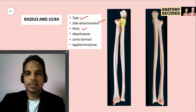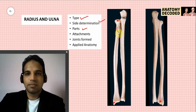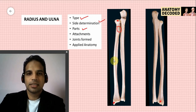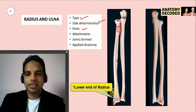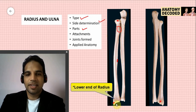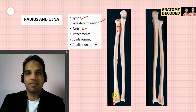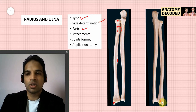Parts of the radius: upper end, shaft, and lower end. In the upper end: the head, the neck (constricted part), and the radial tuberosity. The shaft has three borders and three surfaces; the sharpest border is the interosseous border on the medial aspect. The lower end has five surfaces; the anterior surface is smooth — this is where the radial artery is palpated. On the posterior aspect is the dorsal tubercle of Lister.